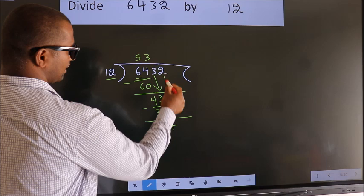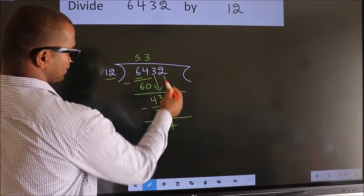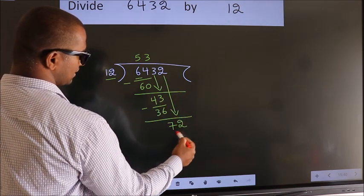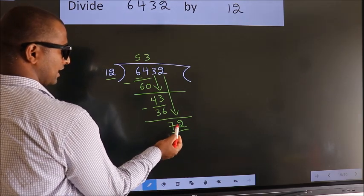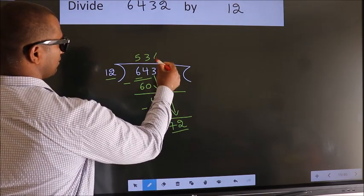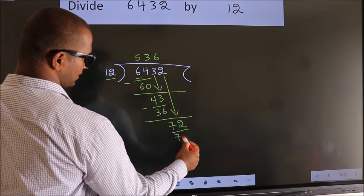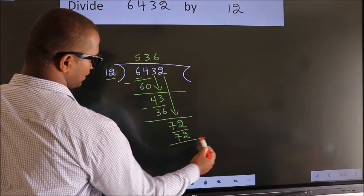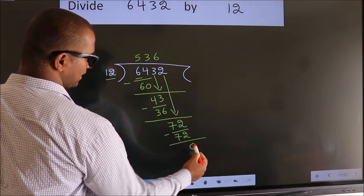After this, bring down the beside number. So, 2 down. 72. When do we get 72 in the 12 table? 12 sixes, 72. Now we subtract. We get 0.